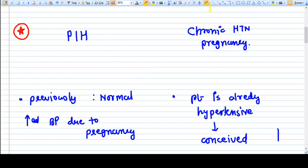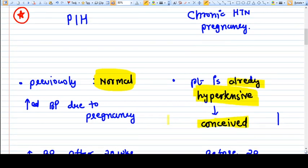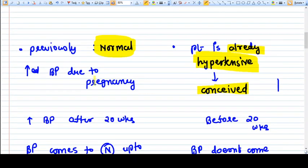If you find increased BP in pregnancy, only two reasons can be there: PIH or chronic hypertension in pregnancy. PIH is a disease in which the blood pressure before the pregnancy was normal, while in chronic hypertension of pregnancy the patient was already hypertensive and now she conceived.